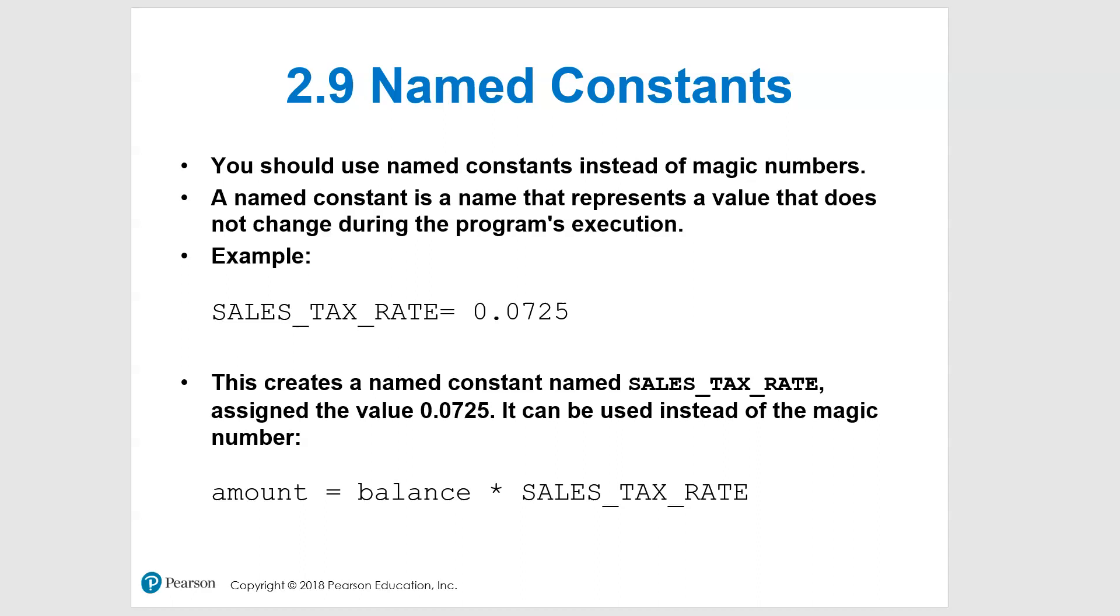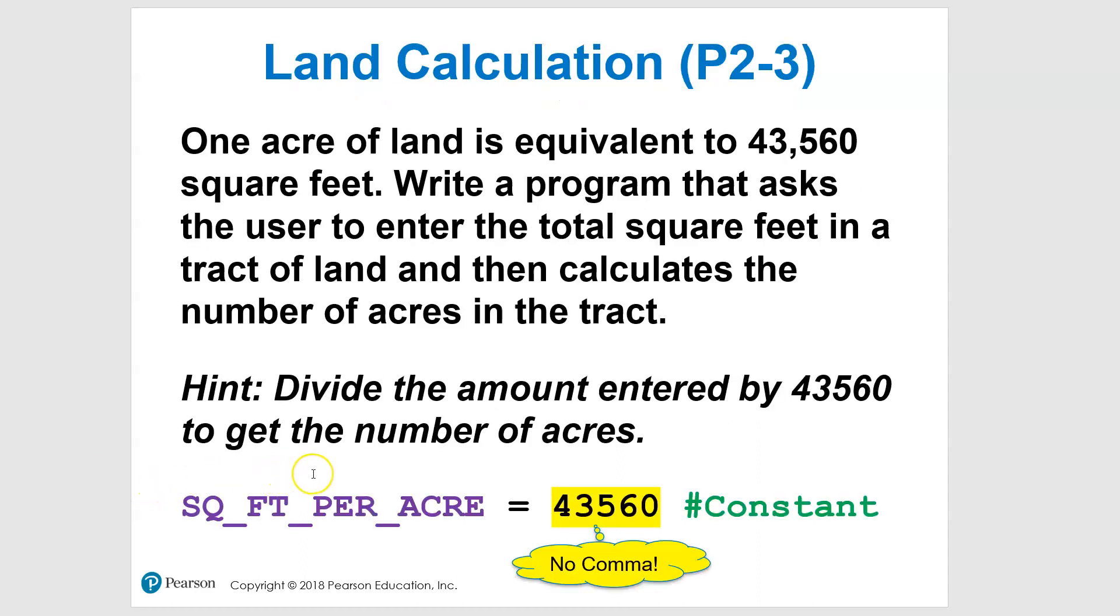With this particular program, you can see it talks about one acre of land is equivalent to 43,560 square feet. This number is not going to change - that is a constant. So we can use it as a constant in this program. You see there's a hint for how to do this, but to define this constant at the top of the program, I'm going to go all caps and have some kind of descriptive variable name, and I'm going to set it equal to